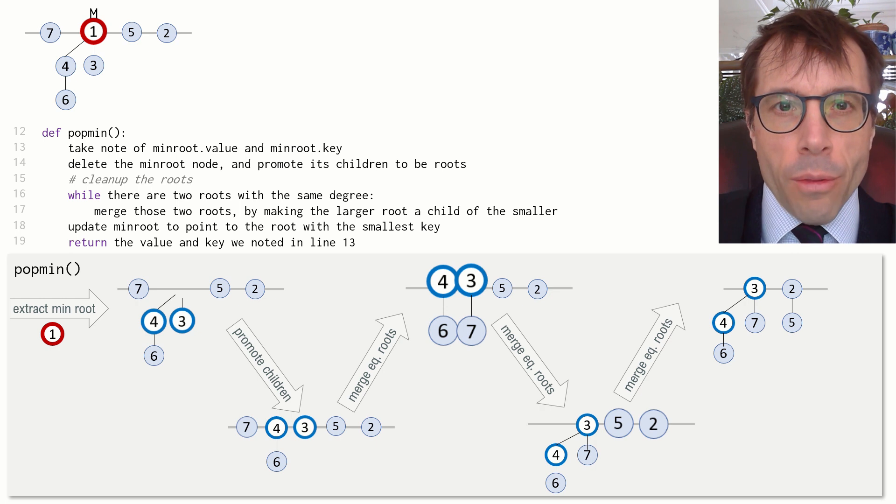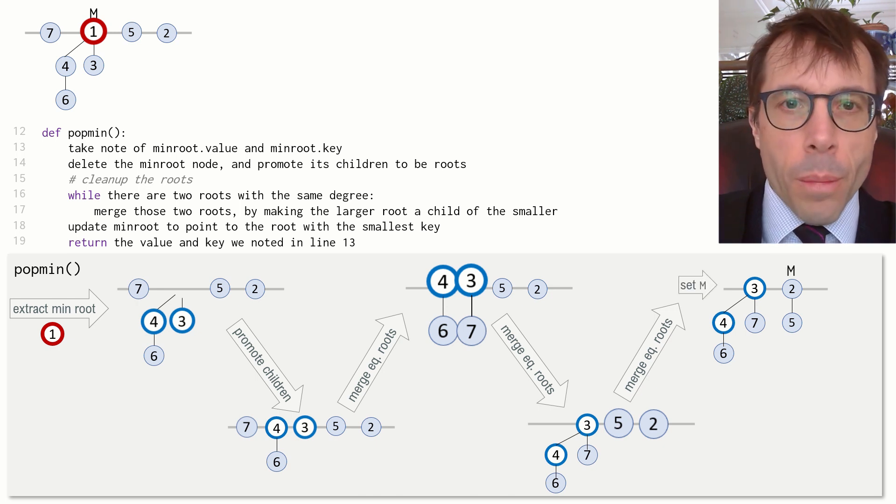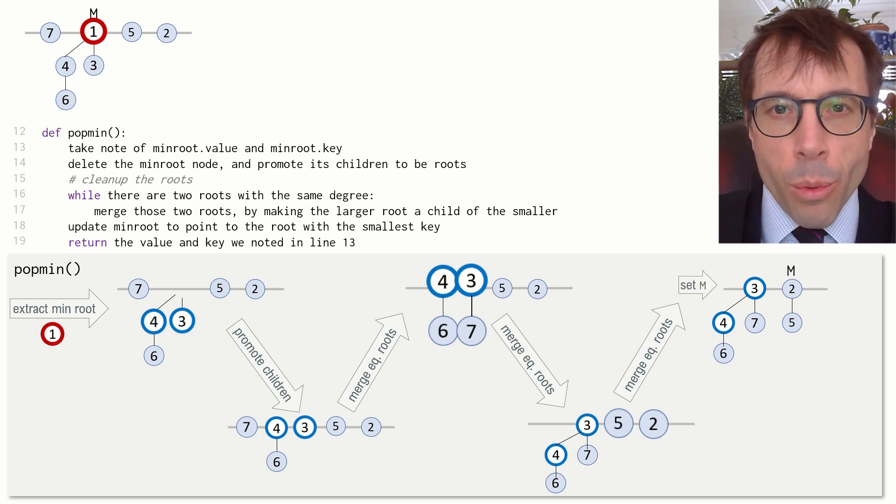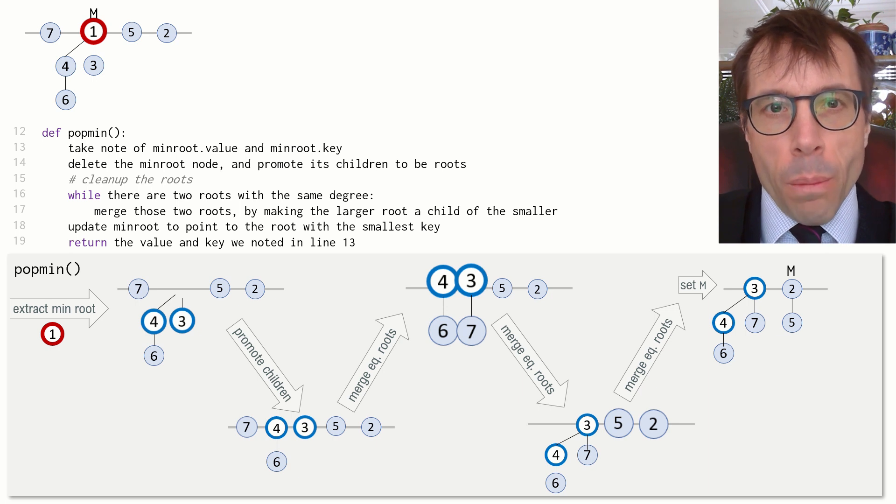The algorithm doesn't specify what order we do the merging in. I've just done it here, going through all the trees left to right, but it's an arbitrary choice. Finally, last step, we scan through all the trees we've ended up with, and we set the min root pointer m to point to the smallest root node. Okay, so that's popmin.